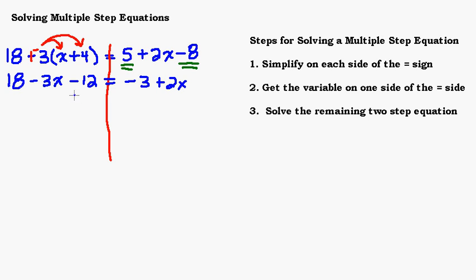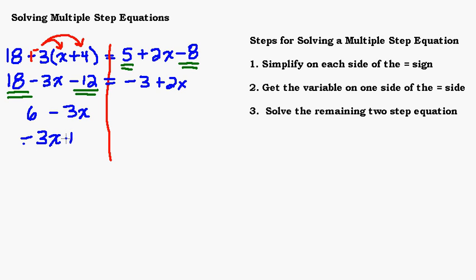Back to the left hand side — it doesn't really matter which side you finish first as long as you simplify each side until it can't be simplified anymore. I have like terms: 18 and minus 12. Combining those gives positive 6, so I can write 6 minus 3x. You could also write negative 3x plus 6 — these two are equivalent and interchangeable.